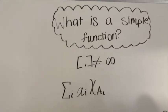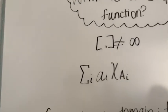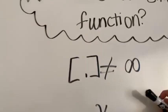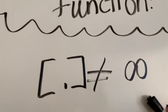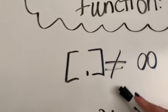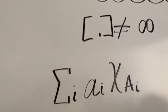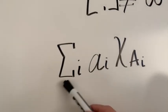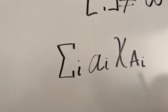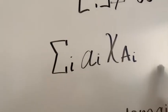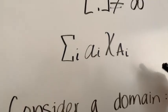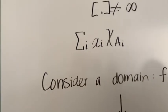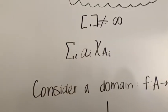What is a simple function? It's a function that can have a finite amount of values within its range. A finite sum, given like this, where the functions x, a_i are characteristic functions on a set A.